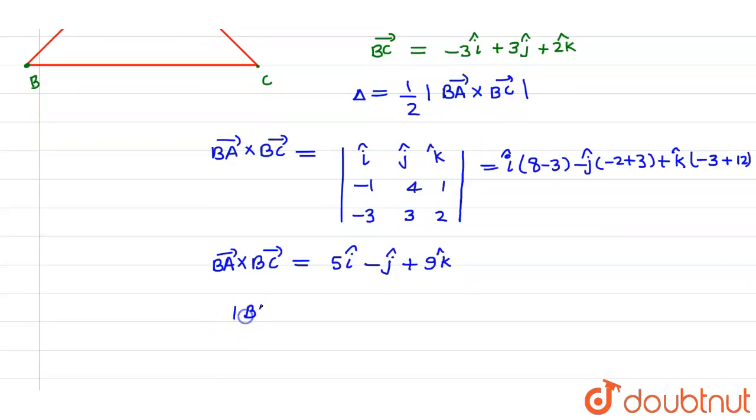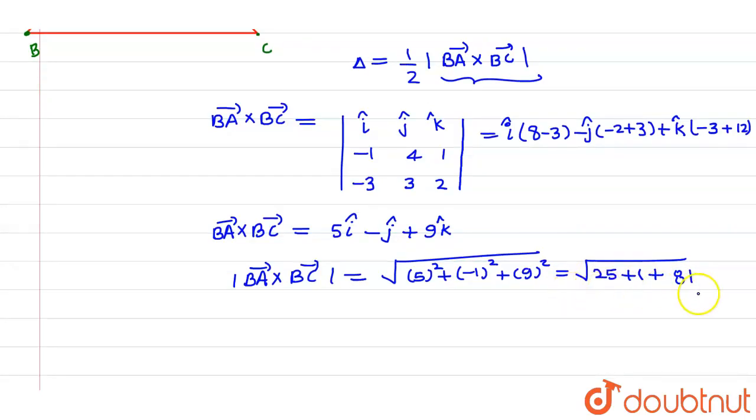Now, the magnitude of BA vector cross BC vector. As we require this particular thing, so this will be given by root over 5 square plus minus 1 square plus 9 square. Now the value of 5 square is nothing but 25 plus 1 plus 9 square is 81. So, now this 80 plus 20 is 100, and 5 plus 1 plus 1, so this can be written as 107.